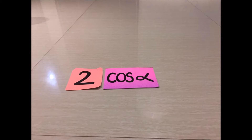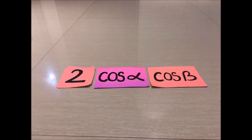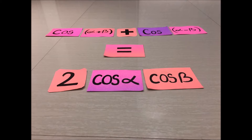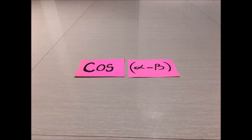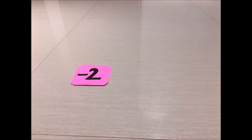2 cos alpha dikali cos beta: cos(alpha + beta) dikurang cos(alpha - beta). Min 2 sin alpha dikali sin beta.